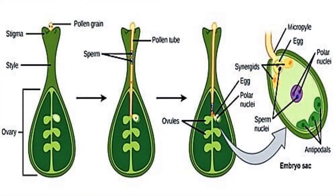Pollen grains from the anther are transferred to the stigma. This is called pollination. Pollination occurs with the help of abiotic agents such as wind and water, and biotic agents such as insects and other animals, which help carry pollen grains to the stigma.